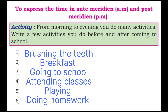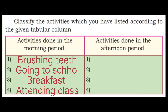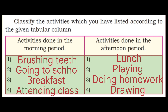To express the time in anti meridian and post meridian. Activity: From morning to evening you do many activities. Write a few activities you do before and after coming to school — for example: brushing teeth, breakfast, going to school, attending classes, playing, doing homework. Classify these activities: morning period activities include brushing teeth, breakfast, going to school, attending class; afternoon period activities include lunch, playing, doing homework, drawing, music, dancing, painting.